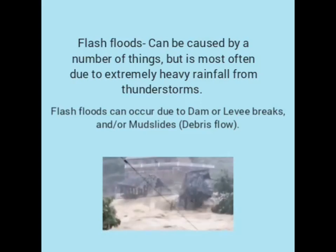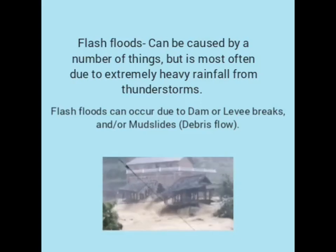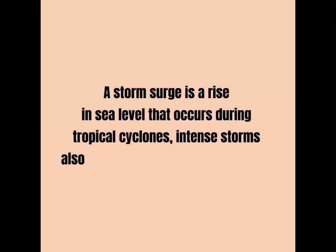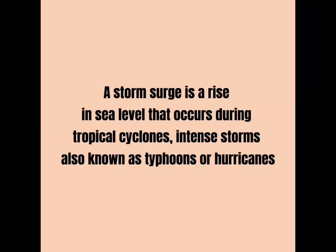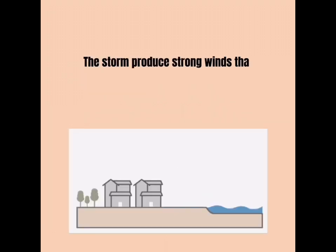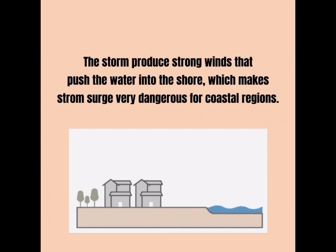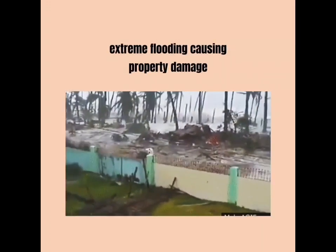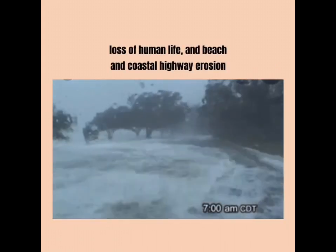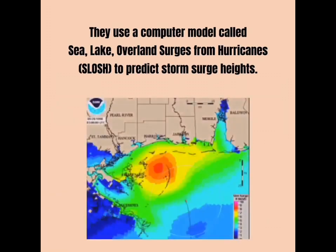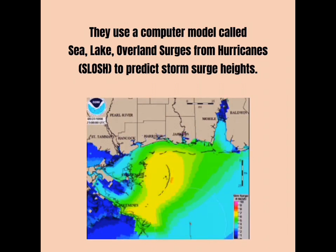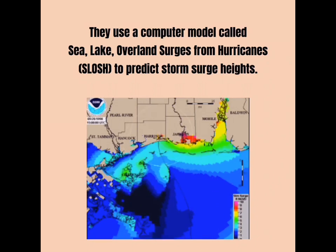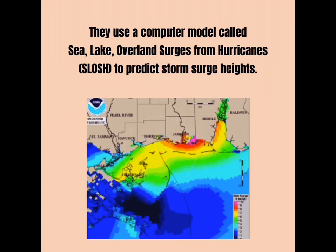Flash floods can occur due to extremely heavy rainfall from thunderstorms, dam or levee breaks, and mudslides. Flash flooding occurs so quickly that people are caught off guard — their situation may become dangerous if they encounter high, fast-moving water while traveling, or the water may rise quickly and trap them at home. Coastal storm surge is a rise in sea level that occurs during tropical cyclones. The storm produces strong winds that push water into the shore, causing extreme flooding, property damage, loss of human life, and coastal highway erosion. A computer model called SLOSH is used to predict storm surge heights based on the hurricane's track, intensity, and size.